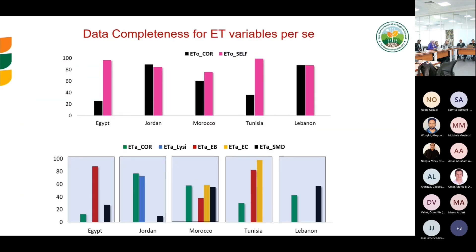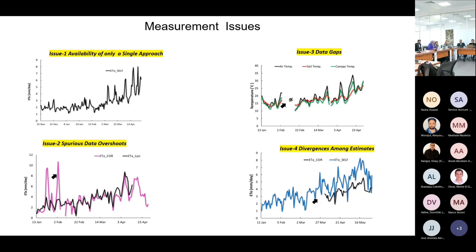This figure shows the completeness of the data collected, though it is not yet fully updated. We observed four main issues in measurement: first, the availability of only a single approach at some sites; second, spuriousness of data where some methods produce unrealistic values; third, data gaps; and fourth, divergence between different estimates — not necessarily unrealistic, but showing inconsistency between methods.